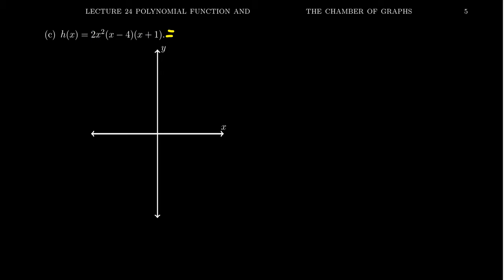That's going to be a 2x to the fourth. The middle terms don't affect the graph as much — they don't make any bearing on the y-intercept or the end behavior.